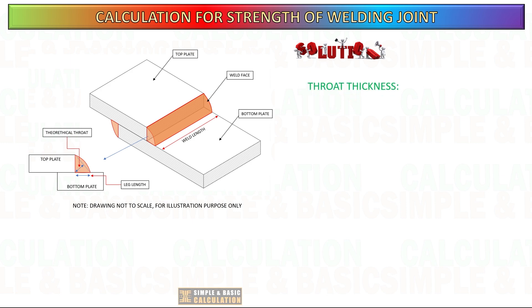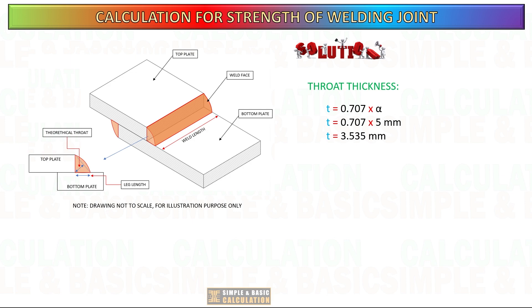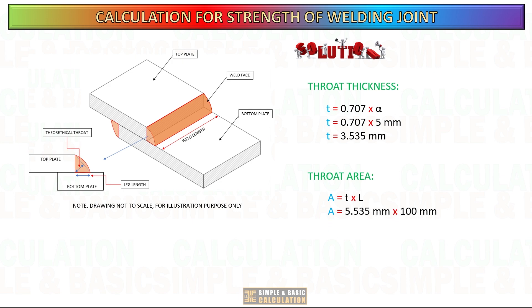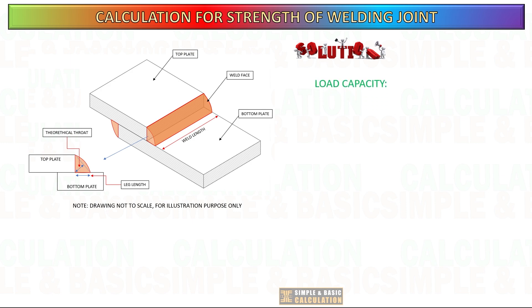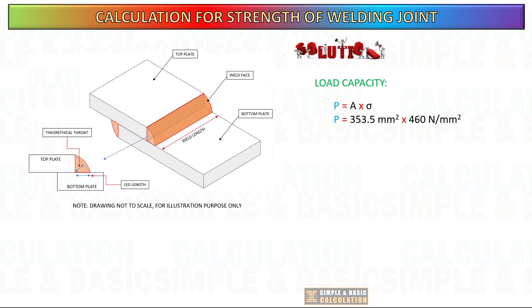Let us do the calculation. First, calculate the throat thickness: multiply the given leg size or throat size by 0.707. Next, after getting the throat thickness, calculate the throat area by multiplying the length of welding by the throat thickness. Once you get the throat area, calculate the strength of the weld by multiplying this area by the tensile strength of the welding material.